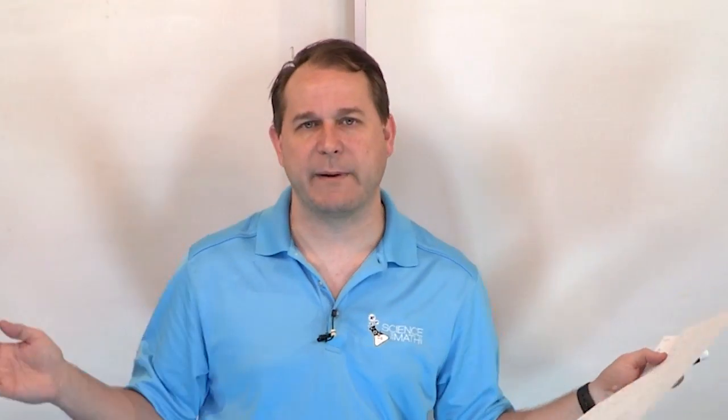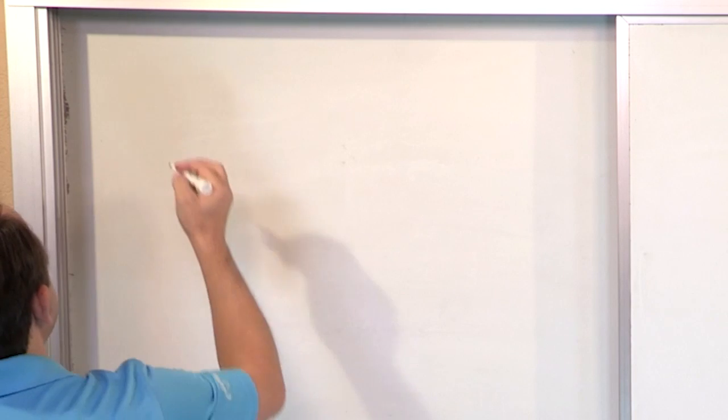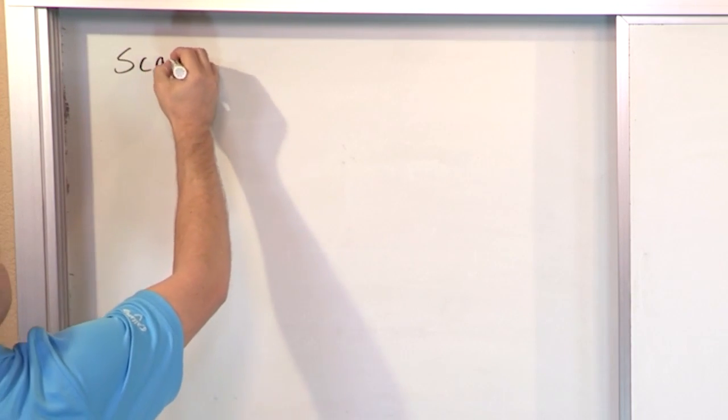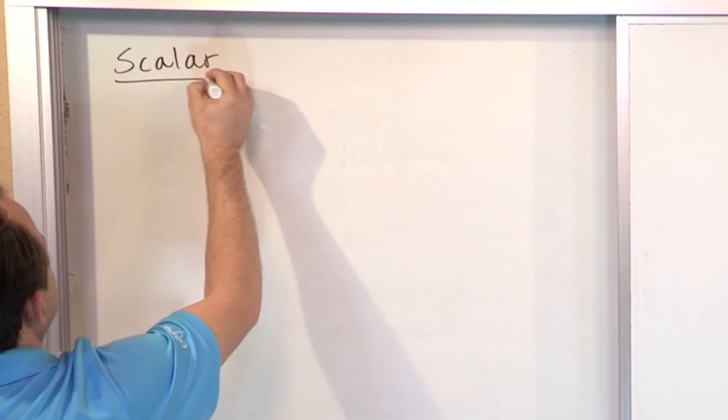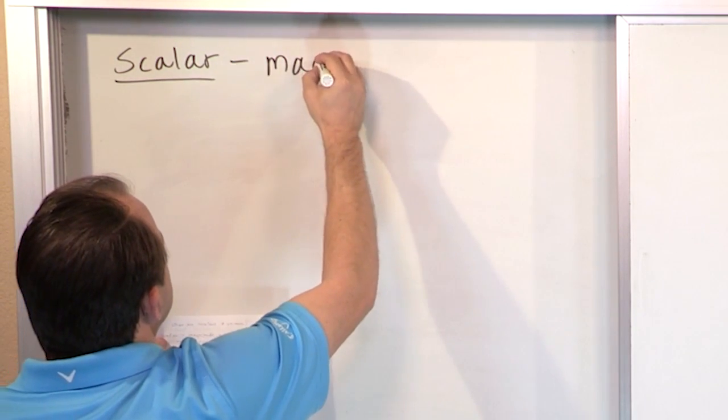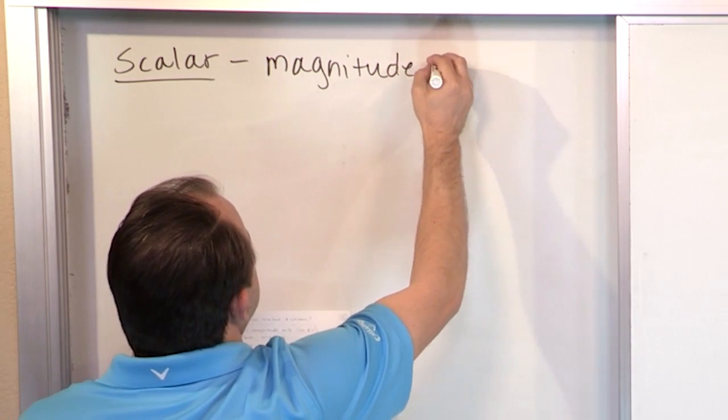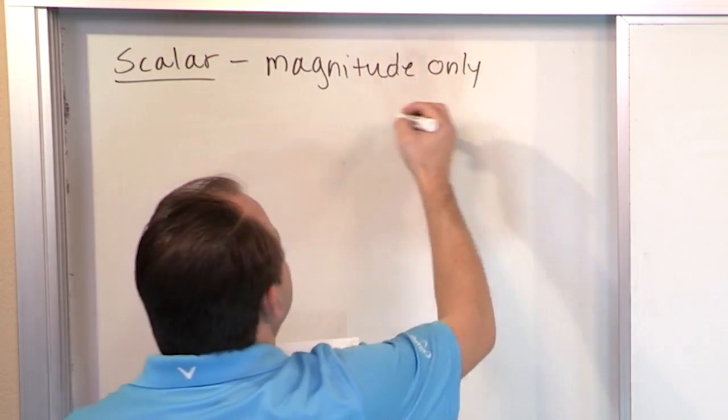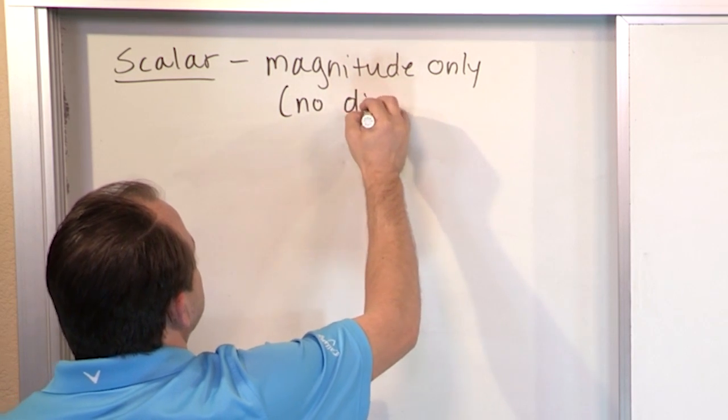Just to disarm the situation, scalars and vectors are very simple. You actually know what they are already; you just have never put those words to them before. We're going to talk about scalars first, then vectors. A scalar is a quantity — any measurement — that only has a magnitude. It doesn't have any direction information. It's magnitude only, with no direction.